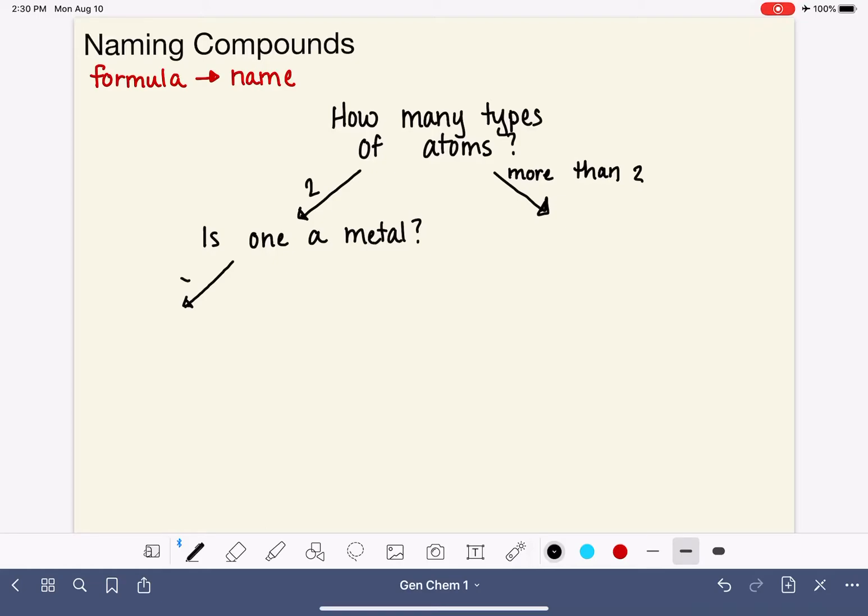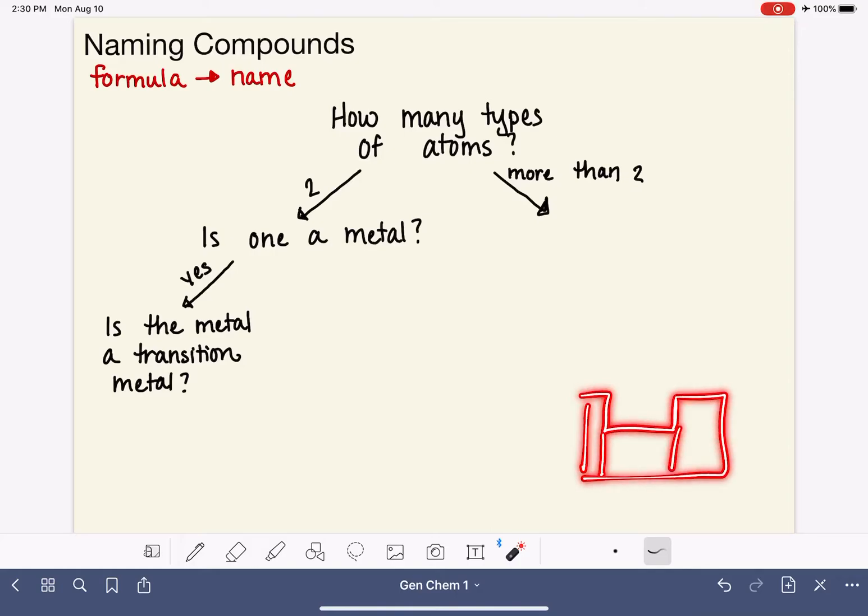Let's say yes, one of them is a metal. Then you need to ask yourself: is the metal a transition metal? The transition metals on the periodic table are the ones in this area right here, in the B columns. If one of your metals is a transition metal - again, this is a yes or no question.